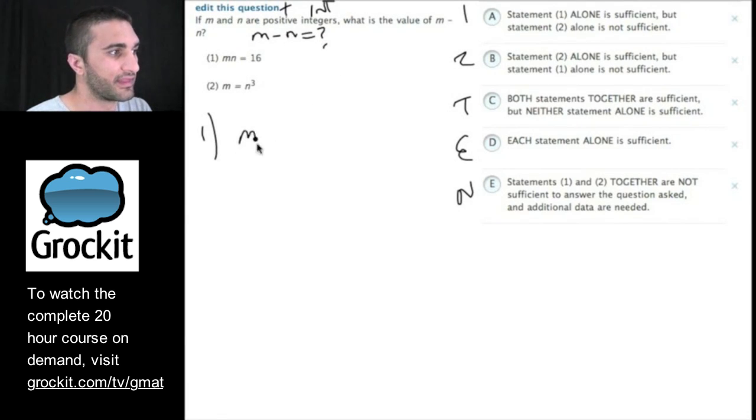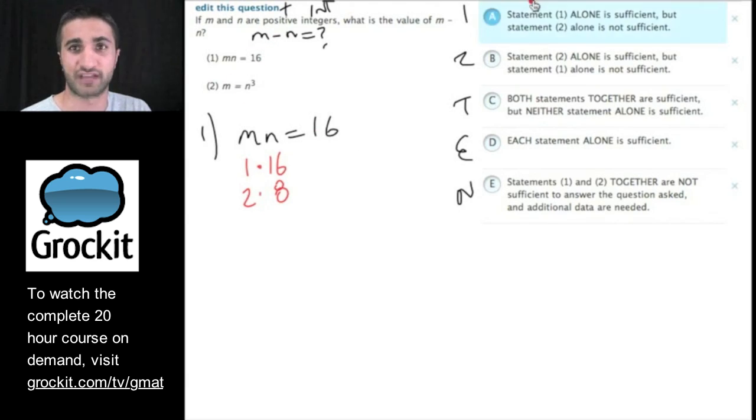So given statement one, that mn is equal to 16, they want to know what m minus n is. So what are some values that we could go ahead and try here? We could say 1 times 16. We could say 2 times 8. And already, I know that I'm going to get different values for m minus n. If m is 1 and n is 16, we'll get negative 15 here. And then, 2 minus 8 would be negative 6. So two different values. I don't know what m minus n is. I can immediately get rid of 1 and e.